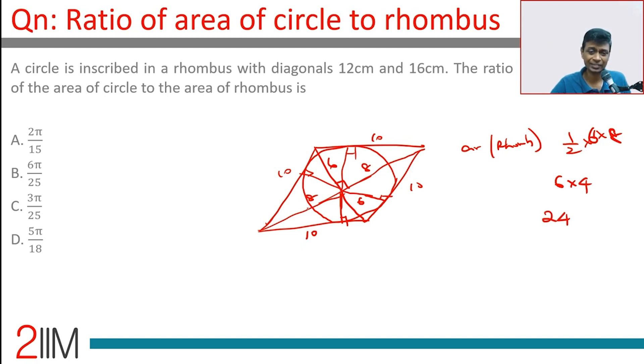So if you find radius we are through. I'm going to take one of these beautiful triangles carved out by half a diagonal and half a diagonal. This is 8, this is 6, this is 90 degrees.